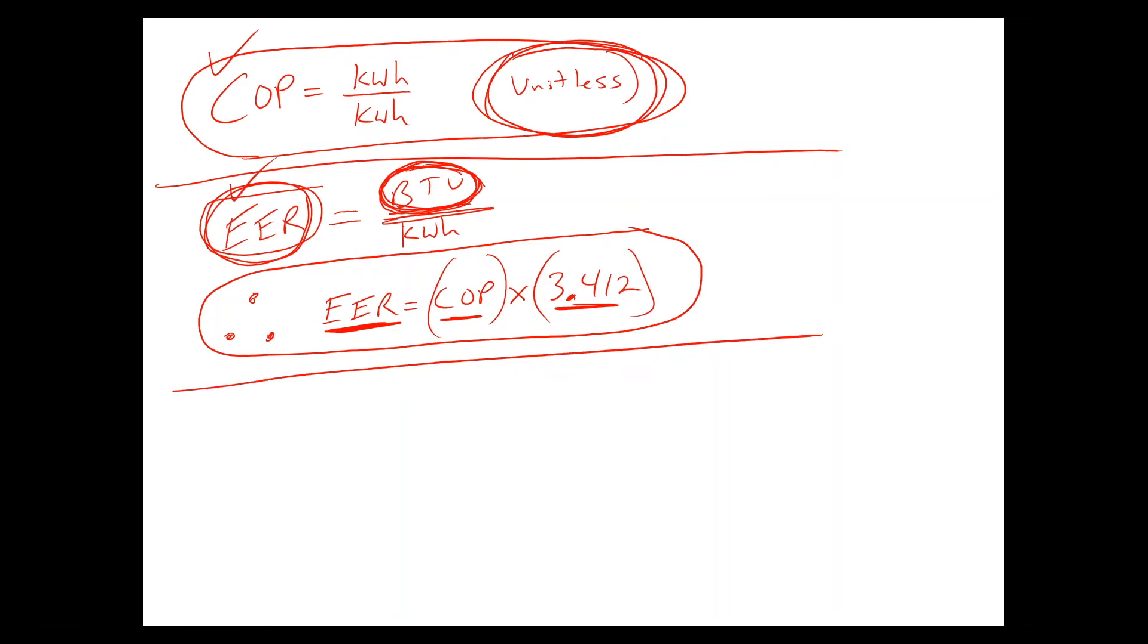One is called the seasonal energy efficiency ratio, which if you consider EER and COP, they're somewhat instantaneous. They are some measurements that are taken. Seasonal energy efficiency ratio is looking at the EER over the summer season. So they take longer measurements. They do this in a lab, they put the heat pump in the condition of summer, which is trying to cool. And the seasonal energy efficiency ratio is a good way to compare models if you need a lot of cooling.